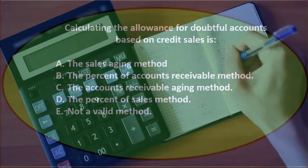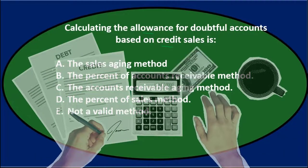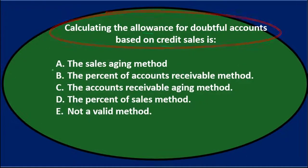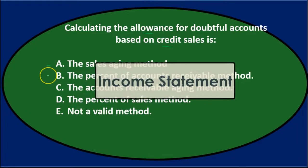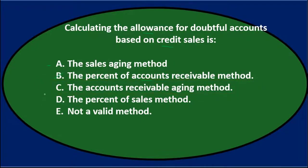Because there are two sides to the transaction — one is a debit to bad debt expense, an income statement account, and the other is the allowance for doubtful accounts, a contra asset. A says the sales aging method, which focuses on the income statement side, so we'll keep that. B says the percentage of accounts receivable method — that focuses on the receivables, not the sales side, so it's not B. C says the accounts receivable aging method — again focusing on receivables, so it's not C.